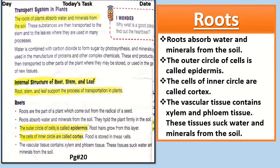Open your science book and come to page number 20. Here you will see the topic: the Transport System in Plants. The roots of a plant absorb water and minerals from the soil. These substances are then transported to the stem and to the leaves, where they are used in many processes. Water is combined with carbon dioxide to form sugar by photosynthesis — the process in which plants make their own food in the presence of sunlight. So we can say that leaves are the food factory of the plants.